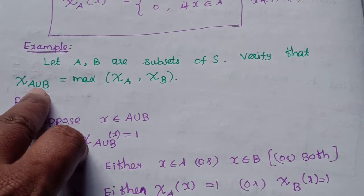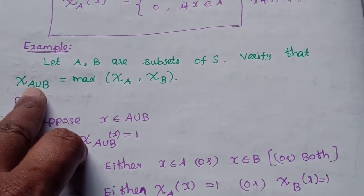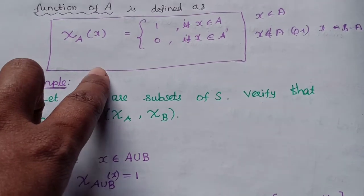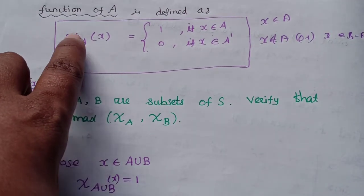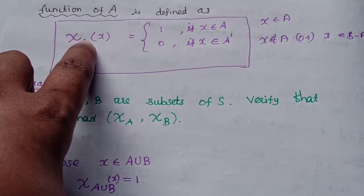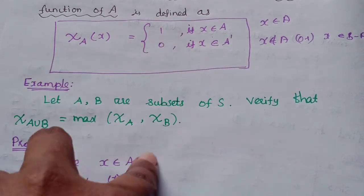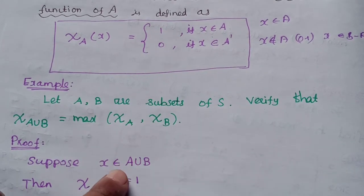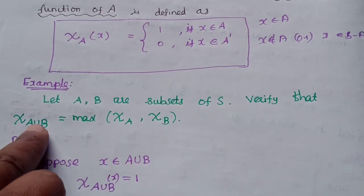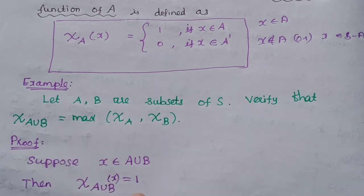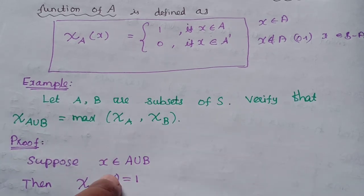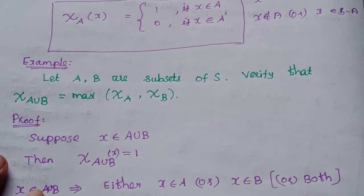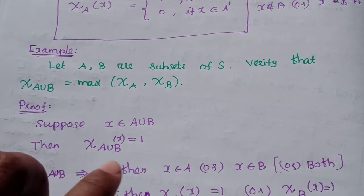Suppose x belongs to A union B. By the definition of the characteristic function, if x belongs to A union B, then psi of A union B of x is equal to 1. Since x belongs to A union B, the characteristic function value is 1.